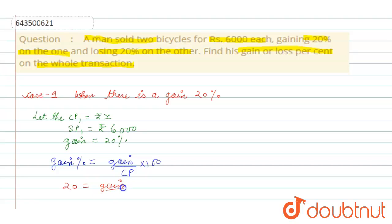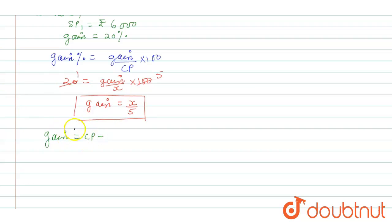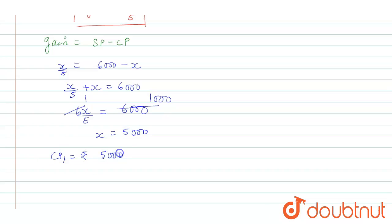From the gain percent formula, gain equals x by 5. Since gain equals SP minus CP, we get x by 5 plus x equals six thousand. Taking LCM, six x by 5 equals six thousand, so x equals five thousand. Therefore CP1 is rupees five thousand.